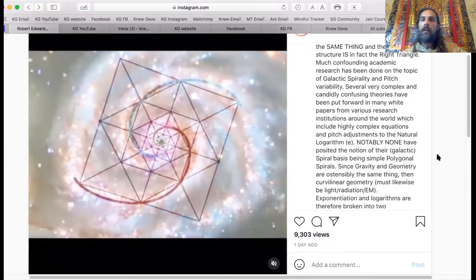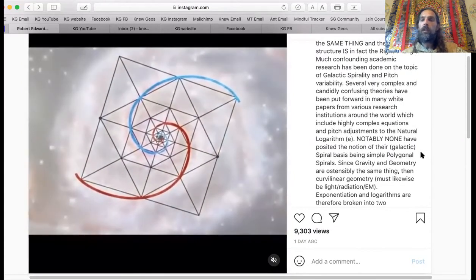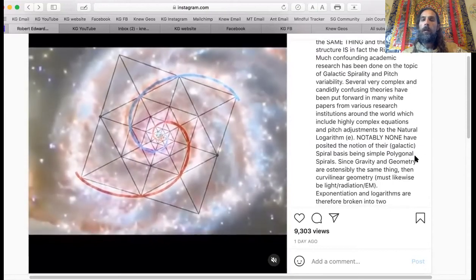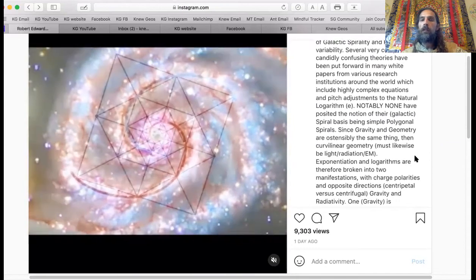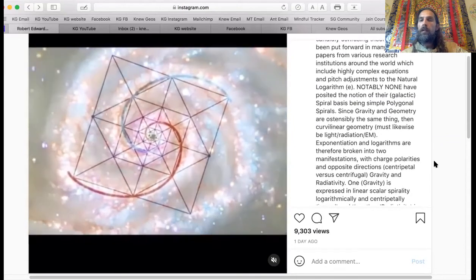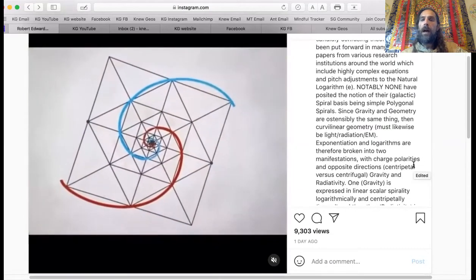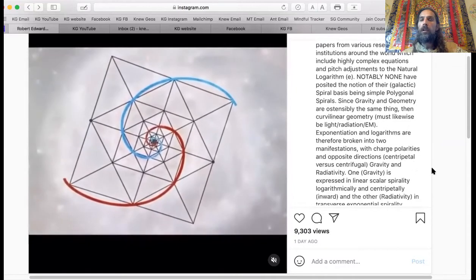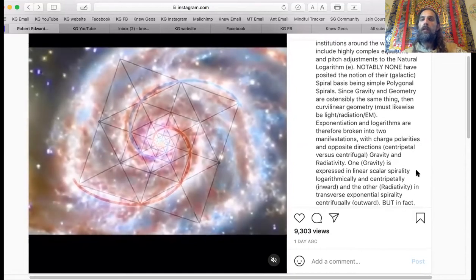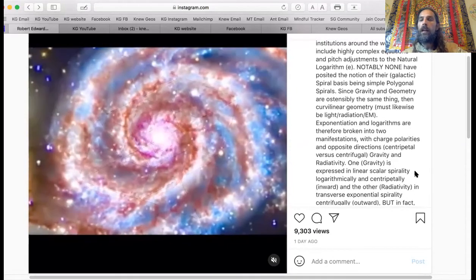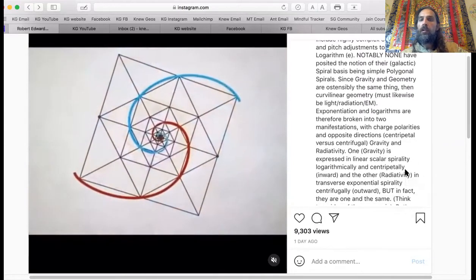Several very complex and candidly confusing theories have been put forward in many white papers from various research institutions around the world which include highly complex equations and pitch adjustments to the natural logarithm. Notably, none have posited the notion of their galactic spiral basis being simply polygonal spirals. Since gravity and geometry are ostensibly the same thing, then curvilinear geometry must likewise be light radiation and electromagnetic energy.